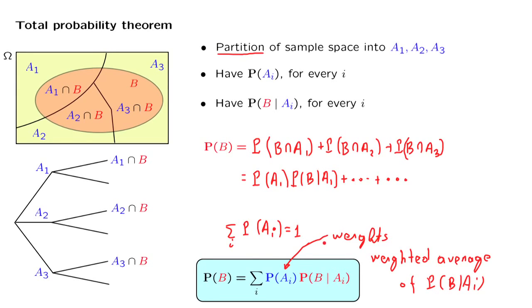In words, the probability that an event occurs is a weighted average of the probability that it has under each possible scenario, where the weights are the probabilities of the different scenarios.